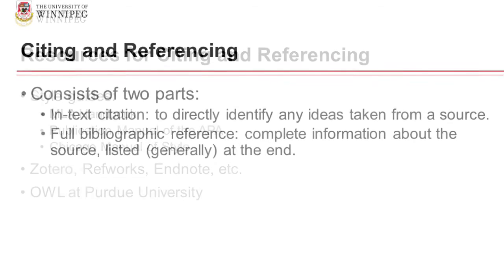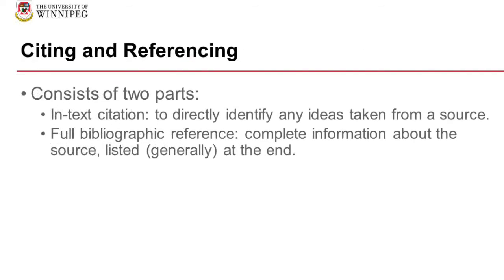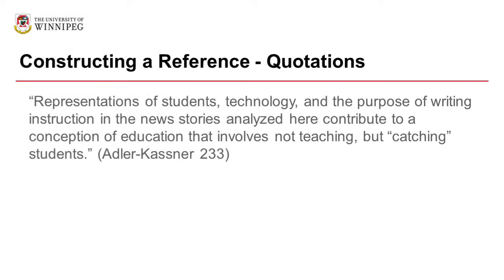So what does citing and referencing look like? Each style will look a little different, but the basic structure is usually the same. It involves two parts: first, an in-text citation, and next, a full reference. The example we use here will be in MLA format, but please make sure you are using the right style for your own work. All quotations or paraphrased ideas need an in-text citation directly in the body of your paper. In APA and MLA formats, the citation will appear in parentheses at the end of the sentence or paragraph.